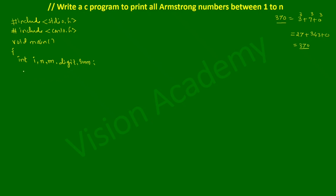Now let us ask the user to enter the value for n. We write a printf statement with the message asking the user to enter the value of n, followed by a semicolon. We receive the value from the user through the keyboard using scanf, with the %d format specifier, ampersand n, and a semicolon.